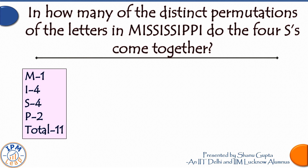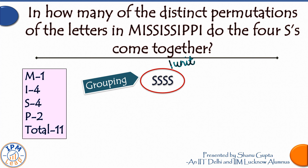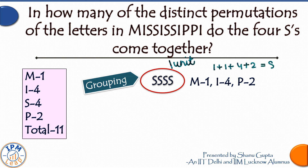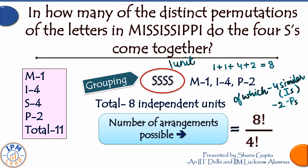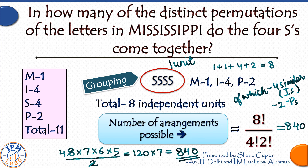Moving on, let's introduce a slight variation: in how many of the distinct permutations of the letters in Mississippi do the four S's come together? We group the four S's into one single unit. Apart from this group, we have M, four I's, and two P's — so one plus one plus four plus two gives eight independent units to be arranged. Out of these eight units, four are alike (the I's) and two others are alike (the P's). The number of arrangements is 8! / (4! × 2!) = 840.